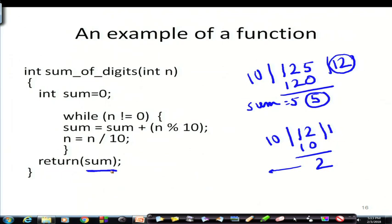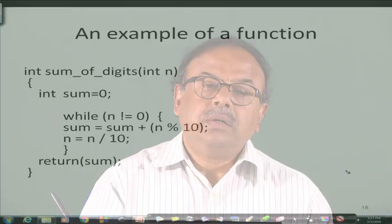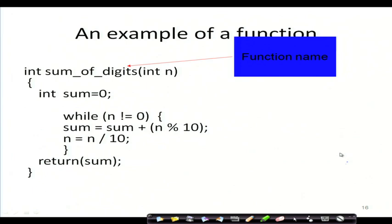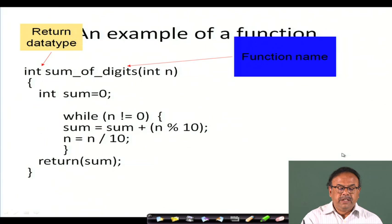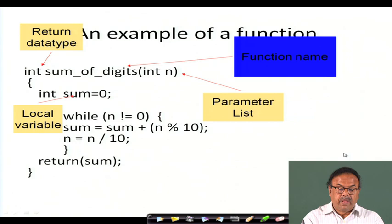Then we find the dividend which is 12, divide that by 10, get remainder 2, so sum becomes 5 plus 2, and so on. Ultimately we get the sum and return it. This n comes as a parameter; sum is an internal variable that will not have life beyond the body of the function. So: sum_of_digits is the function name, int is the return data type, n is in the parameter list, sum is the local variable, and return sum is the return statement.